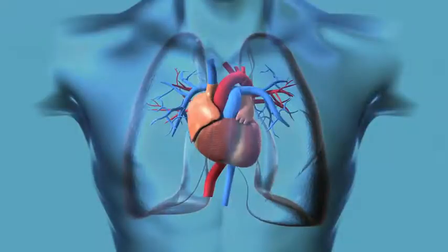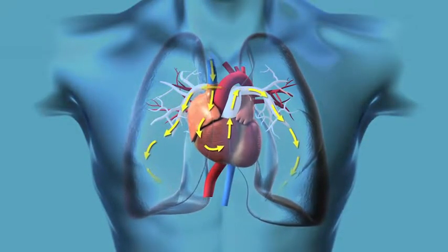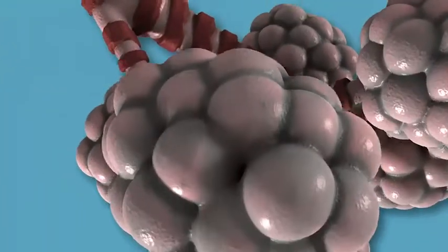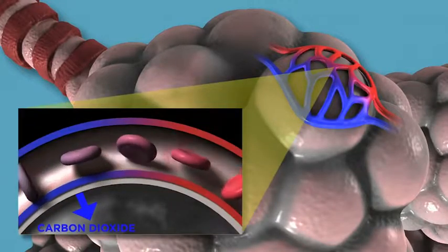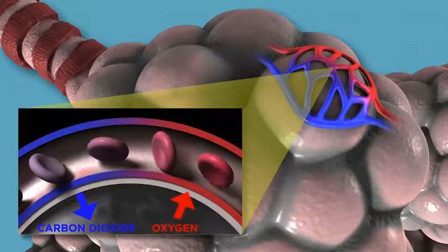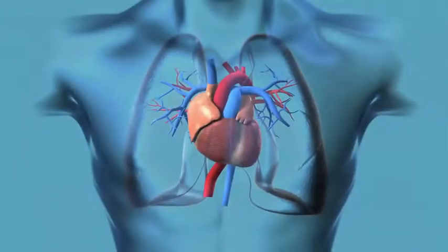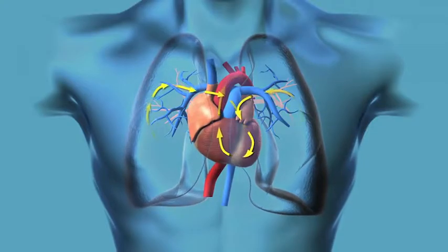Gas exchange is the exchange of oxygen and carbon dioxide between the air and the blood in the lungs. Blood enters the lungs through the pulmonary arteries, then moves through arterioles and into the alveolar capillaries. Oxygen and carbon dioxide are exchanged between blood and the air. The newly oxygenated blood then flows back to the heart through the pulmonary veins, so the heart can distribute oxygen to the rest of the body.